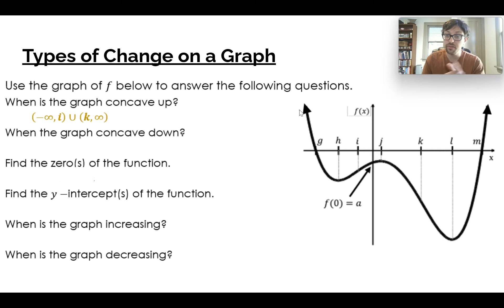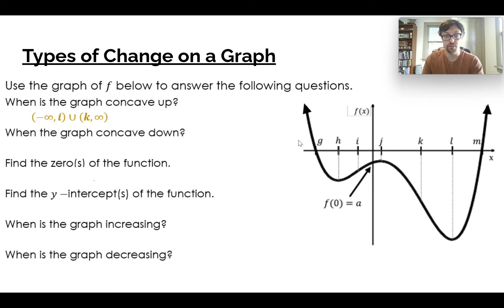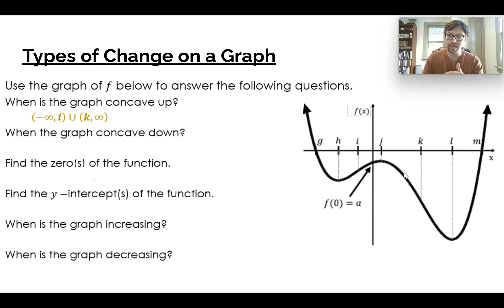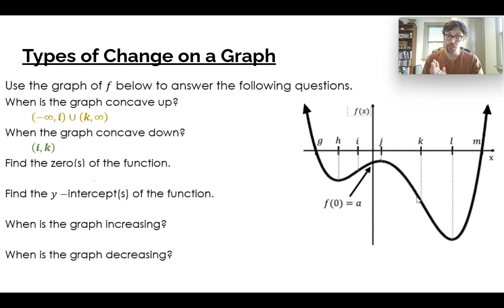We go to negative infinity because we've got that arrow that keeps going in that direction. Same thing with k going to positive infinity. But concave down is this middle piece — that i to k is where we are concave down because it's making that pouring-out shape.